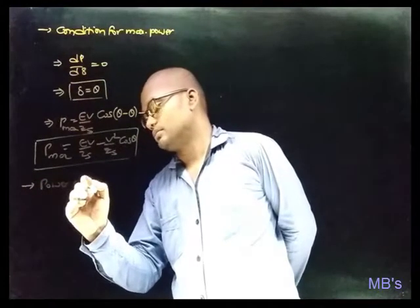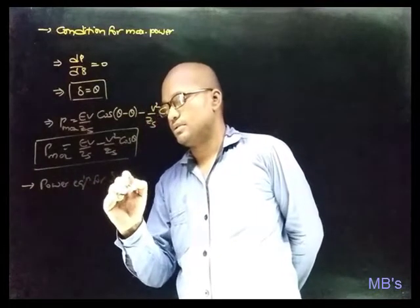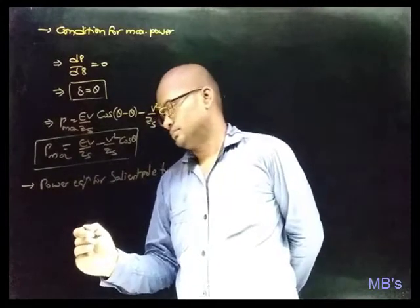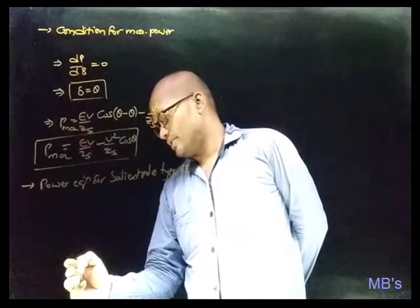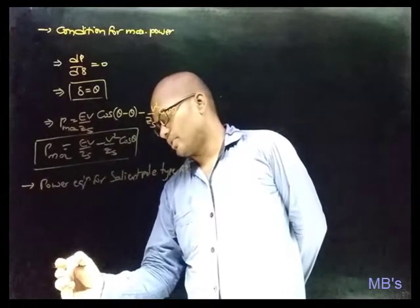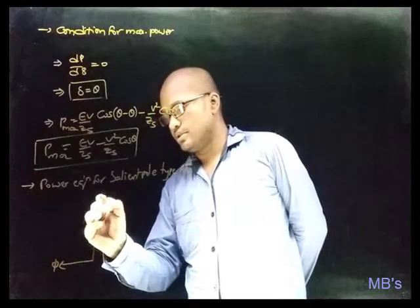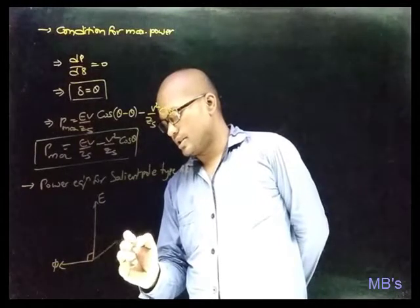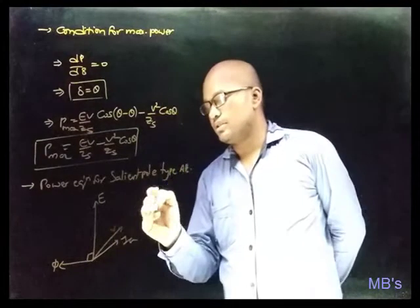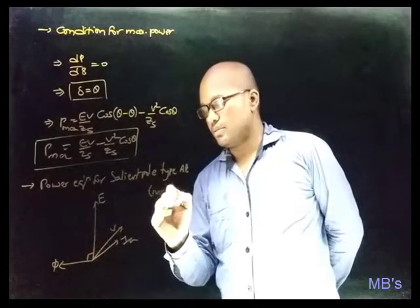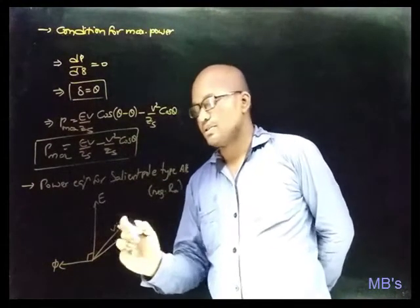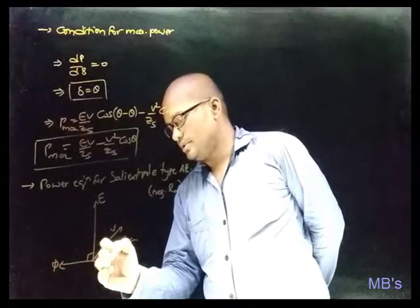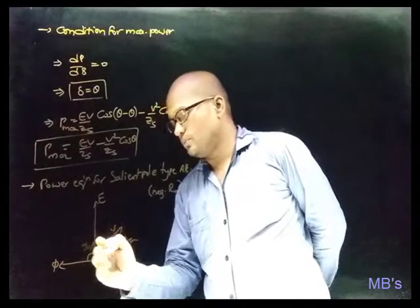Now the power equation for the salient pole type alternator is obtained from the phasor diagram. Drawing the phasor diagram for the salient pole alternator: V is the terminal voltage, E is the induced EMF, and IA is the armature current. Considering a lagging load and neglecting armature resistance Ra, only reactance drops are considered. The component of IA along the d-axis is ID, and the component along the q-axis is IQ.